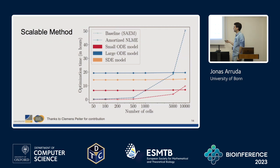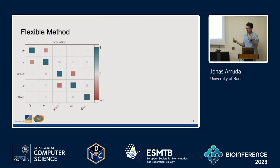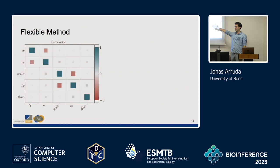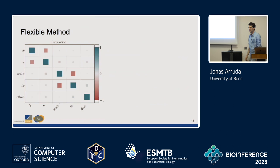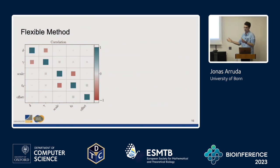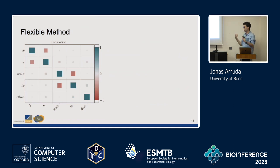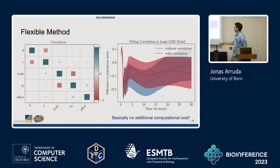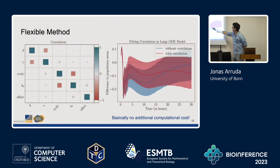Another nice thing is the method is really flexible. Standard estimation methods for mixed effect models can only handle ODE or stochastic differential equation models, but our method is general. Also, if you run a 50-hour stochastic approximation and then realize your parameters are correlated, you have to restart. With this method, you train your neural networks once and can still change the population model — incorporating correlations without any extra cost. Here you can see with and without correlation: in red with correlation and in blue without, and the fit actually gets improved.